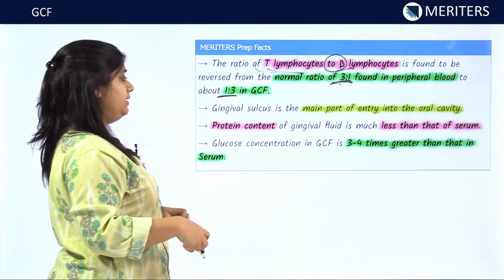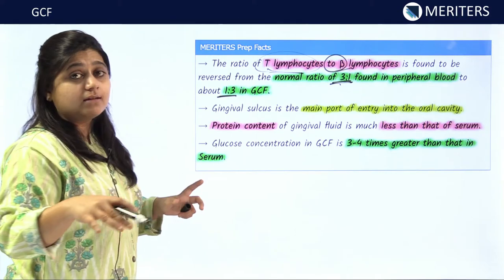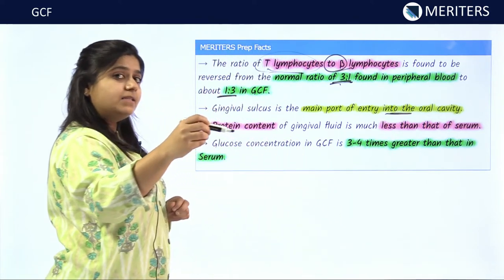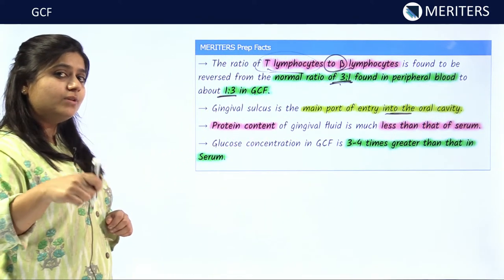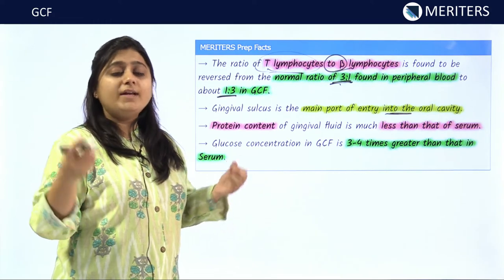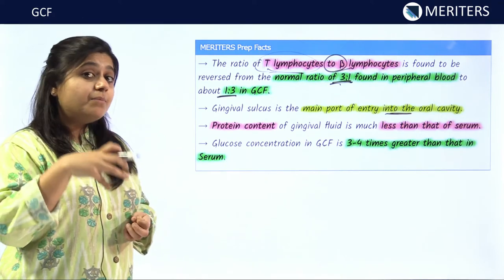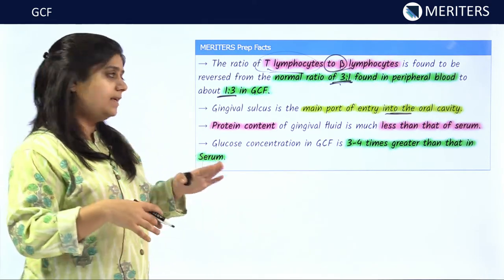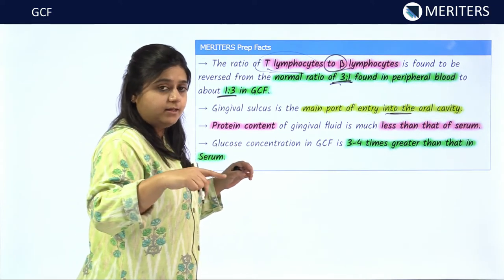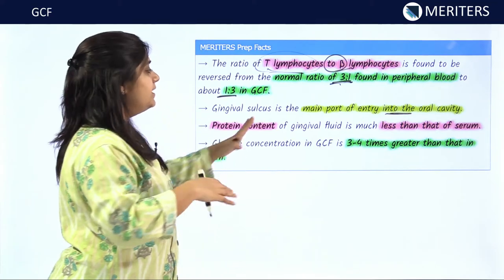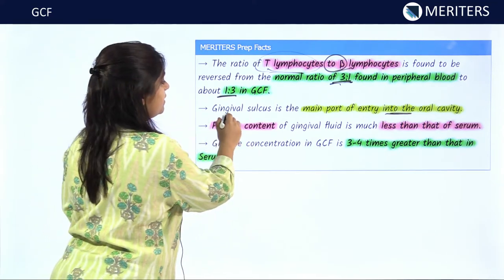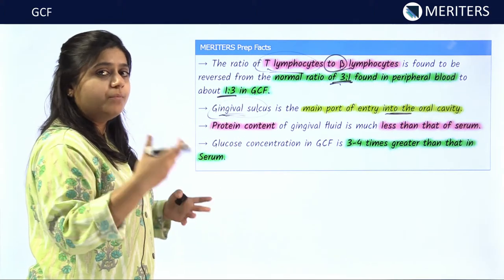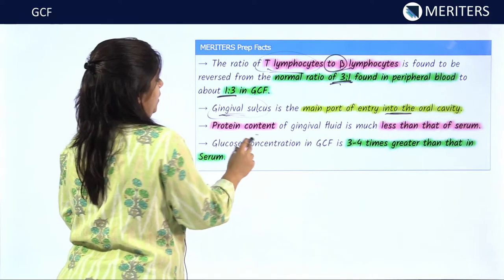The gingival sulcus is the main port of entry into the oral cavity — bacteria from the oral cavity enter into the connective tissue through the gingival sulcus. Various enzymes and medicines produced in GCF also enter this way. The protein content of gingival fluid is much less than the serum, and the glucose content of GCF is three to four times greater than serum.